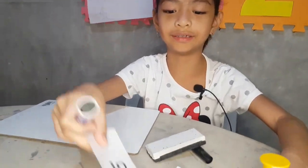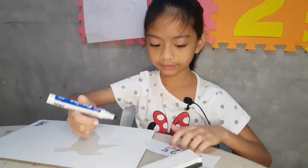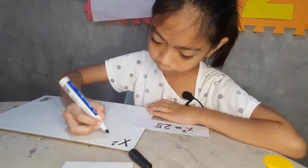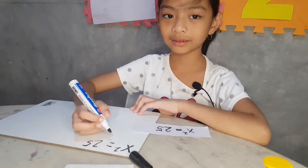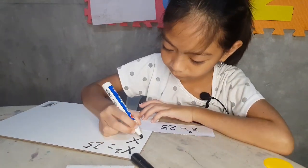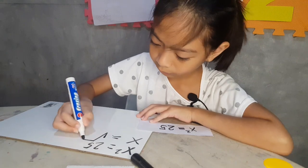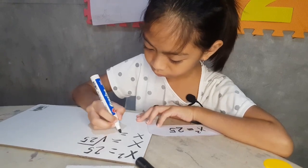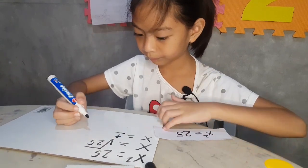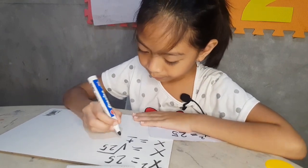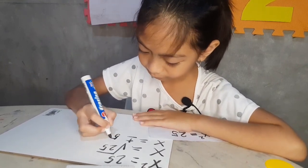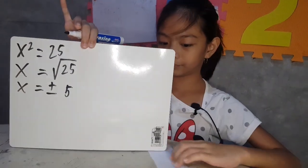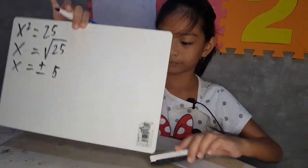Let's start with the first one. X squared equals 75. Show your answer — show the board. Alright, good job.